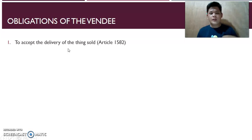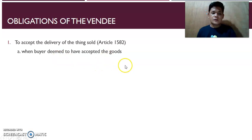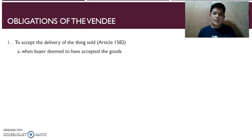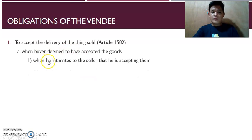So the first obligation of the vendee is to accept the delivery — self-explanatory. If you are the buyer, your obligations are: first, to accept the delivery. Next, when is the buyer deemed to have accepted the goods? The law provides clear rules for this. Number one: when he intimates to the seller that he is accepting them — in arms-length transactions, the seller delivers the goods to the buyer.